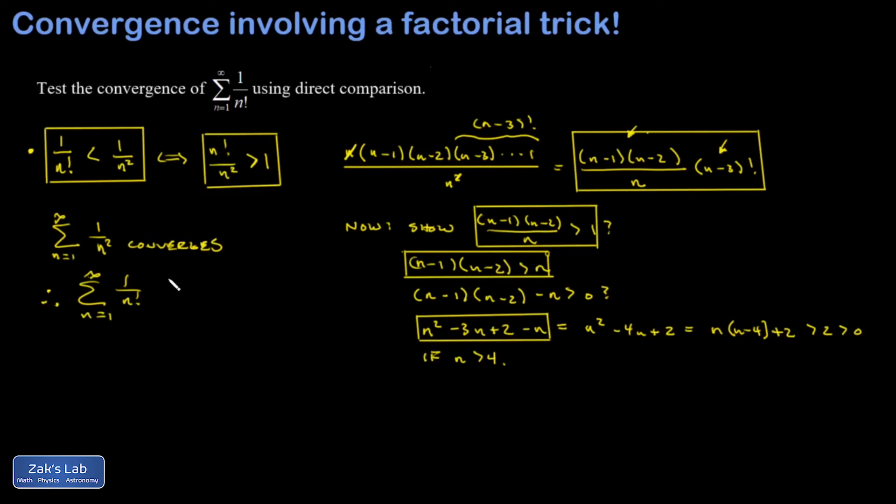Therefore, the sum n equals 1 to infinity of 1 over n factorial converges as well.